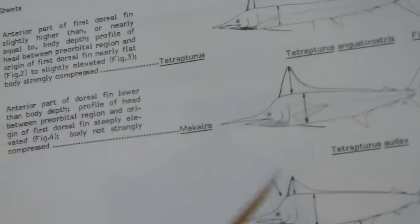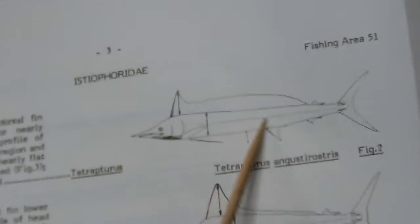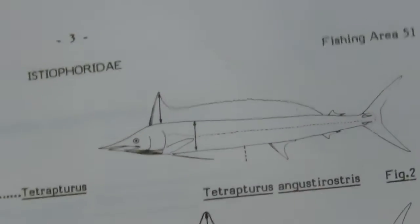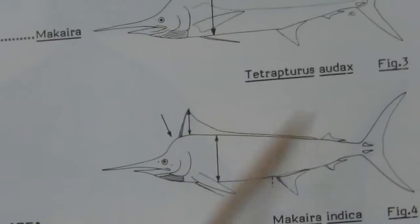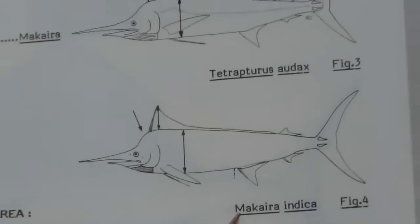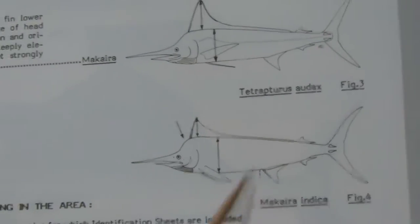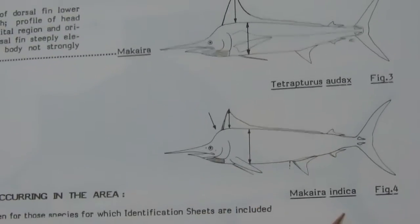Next is Istiophoridae. The lateral line is always well visible, except in large specimens of Makaira nigricans and Makaira indica, where it is not clearly found.